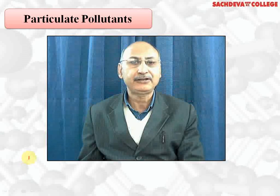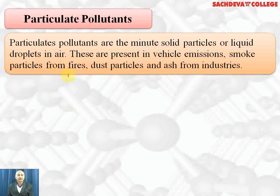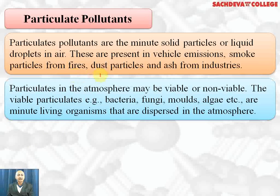Next we are taking particulate pollutants. Particulate pollutants are minute solid particles or liquid droplets in air. They are present in vehicle emissions, smoke particles from fires, dust particles from fly ash and ash from other industries also. Thermal power plants produce a lot of fly ash which remains in the atmosphere.